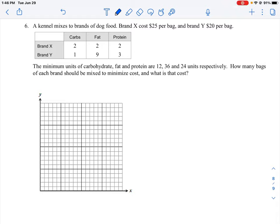Alright, so let's take a look at question number six. In this question, we're given a data table where we're given two brands of dog food that have a certain amount of nutrients in each brand, and we're told how much each brand costs. So we have brand X and we have brand Y. One costs $25 a bag, the other costs $20 per bag.